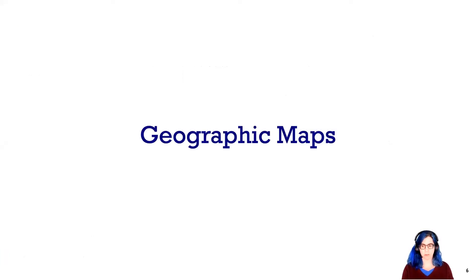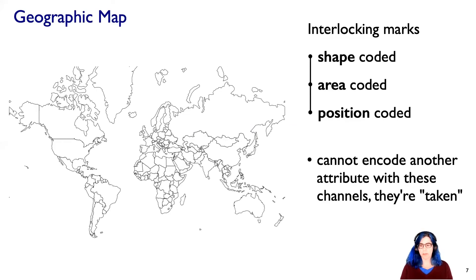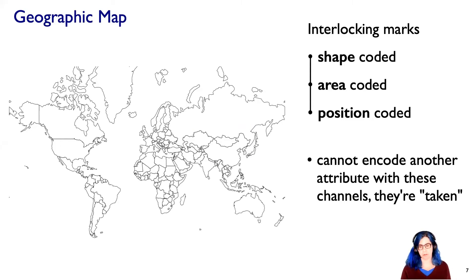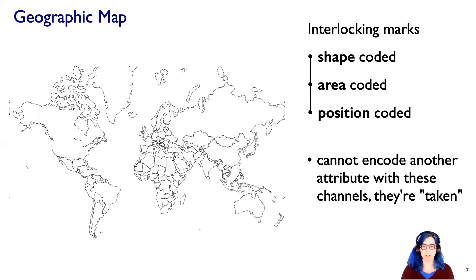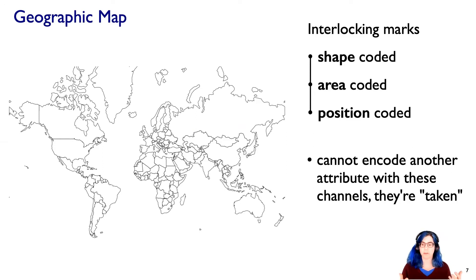We'll start with geographic. What's going on with a geographic map? Here's an example of one. What's crucial is that we understand that the marks on this map are interlocking marks. Sometimes these are called area marks, but they're not just area — their shape, their position. We can't move one without wrecking the whole thing. We can't take Canada and move it over. We can't shape code it, we can't size code it. It interlocks with all these other marks, so we can't take other attributes and encode them with those channels. They're taken.